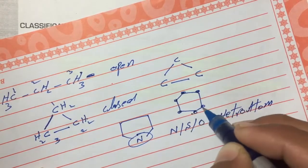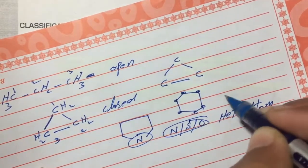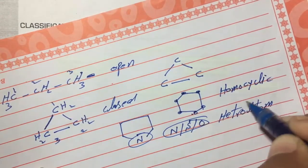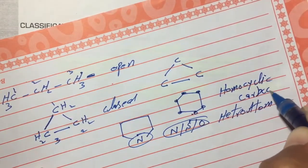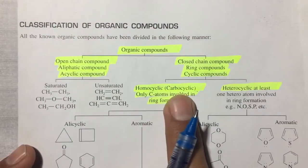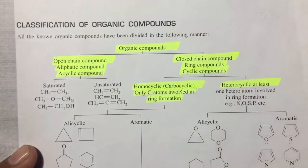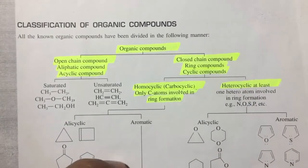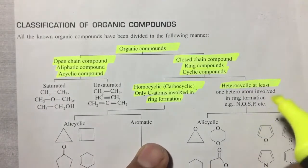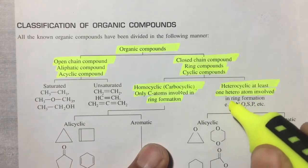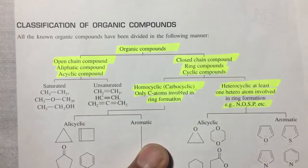If the ring contains only carbon atoms, it is called a homocyclic compound. If the ring contains a heteroatom, it is called a heterocyclic compound. Homocyclic is different from heterocyclic. Heterocyclic compounds contain heteroatoms such as nitrogen, oxygen, sulfur, phosphorus, etc. in the ring.